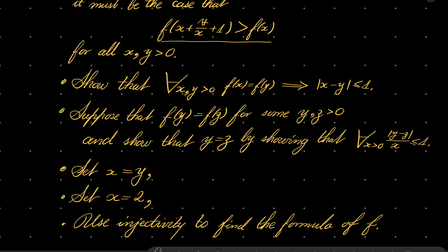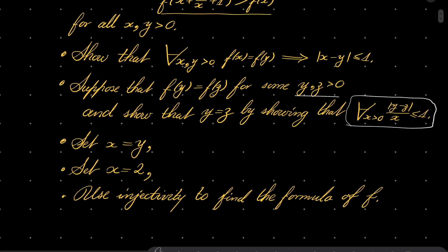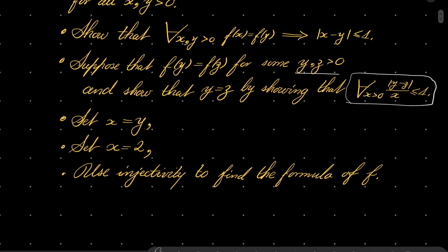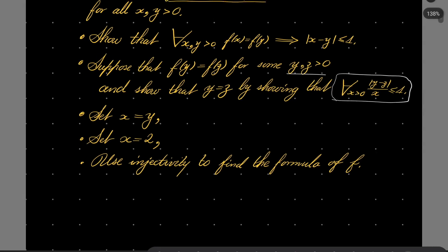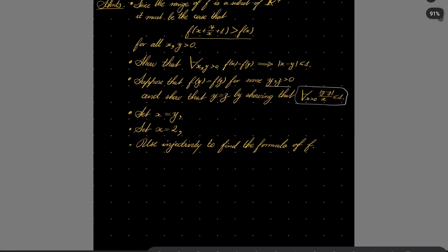And then you should show that our function is injective in the following way. Suppose that f(y) = f(z) for some positive numbers y and z, and show that for every x > 0, the absolute value of (y - z)/x is less than or equal to one, which can only mean that y = z, because it holds for every positive x. After showing injectivity, set x = y, then set x = 2 and use injectivity to find the explicit formula of our function. Also do the verification at the very end. Give this problem a try and I will see you in just a minute.